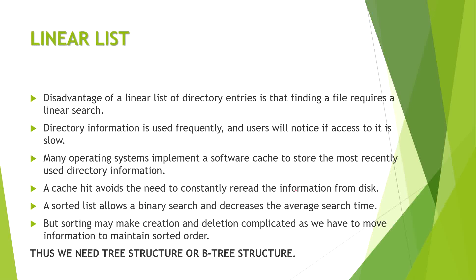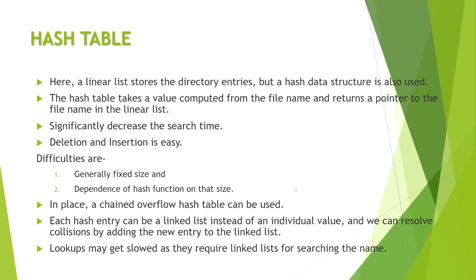The drawbacks of a linear list include that it is time-consuming during searching. Using sorting techniques like binary search adds its own time and space complexity. To address this, we can use a B-tree, where searching takes less time. In the next approach, we use a hash table.